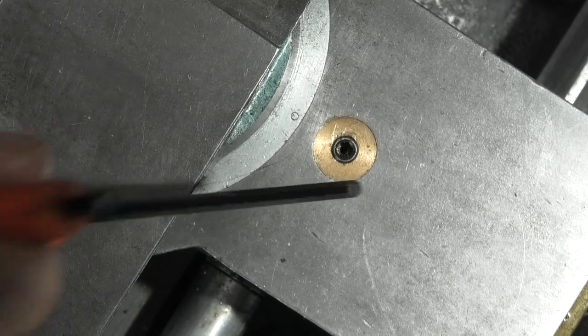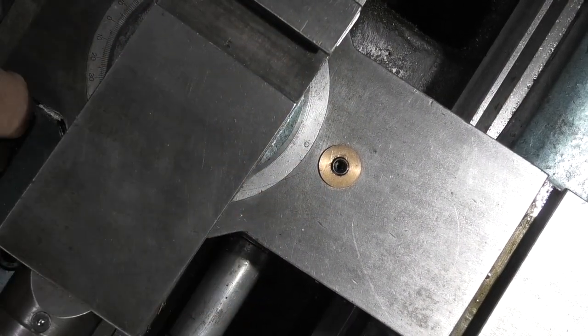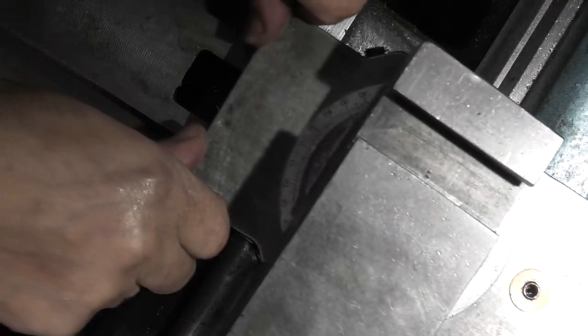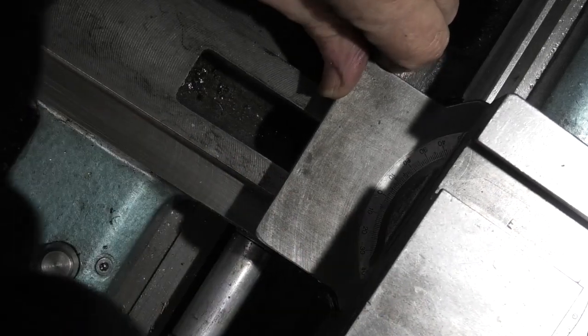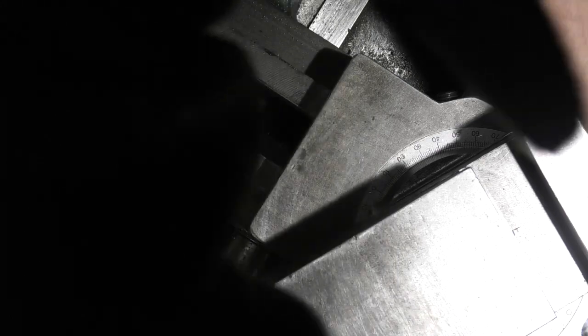The next job is to slacken off this screw here which is in the end of the nut. So what you need to do is push the slide backwards and then you can get the nut out underneath at the end.